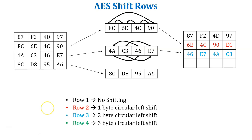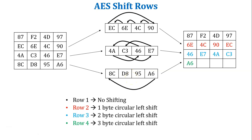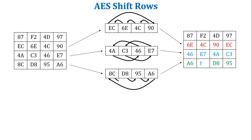Row 4 performs a 3-byte circular left shift. Starting with A6 from the right-hand side, A6 performs a 3-byte left shift and is placed at the first position. Then 95 performs a 3-byte circular left shift and is placed at the last position. D8 performs a 3-byte circular left shift and is placed at the third position. Finally, 8C performs a 3-byte circular left shift and is placed at the second position.